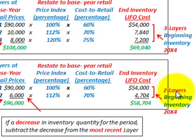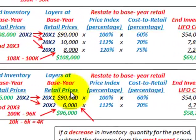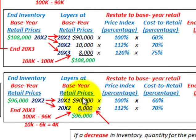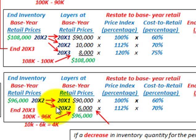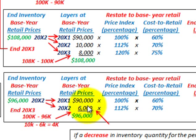In this Case 2 example, we end up with two layers as beginning inventory for 20x4. To summarize: we dealt with two cases — an increase in ending inventory over beginning inventory, where we added an extra layer, and a decrease in inventory, where we peeled off or subtracted the decrease from the most recent inventory layer. Those layers are carried over from the end of the previous year into the beginning of the current year.